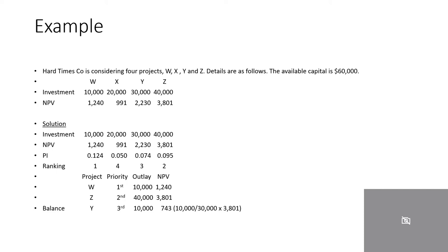Project W has the highest PI and is therefore ranked first. Project Z has the second highest PI and is ranked number two. Project Y has the third highest PI and is ranked number three. Project X is ranked number four.